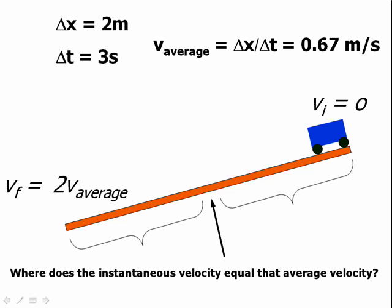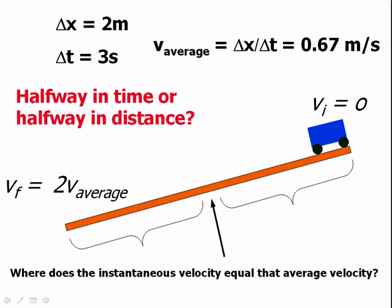But the question is, what do I mean by halfway? Does this happen halfway in time, or halfway in distance? We all agree that for part of the journey, the cart's going to be going slower than the average velocity. For part of the journey, it's going to be going faster. But is it halfway in time, or halfway in distance, where this transition takes place?